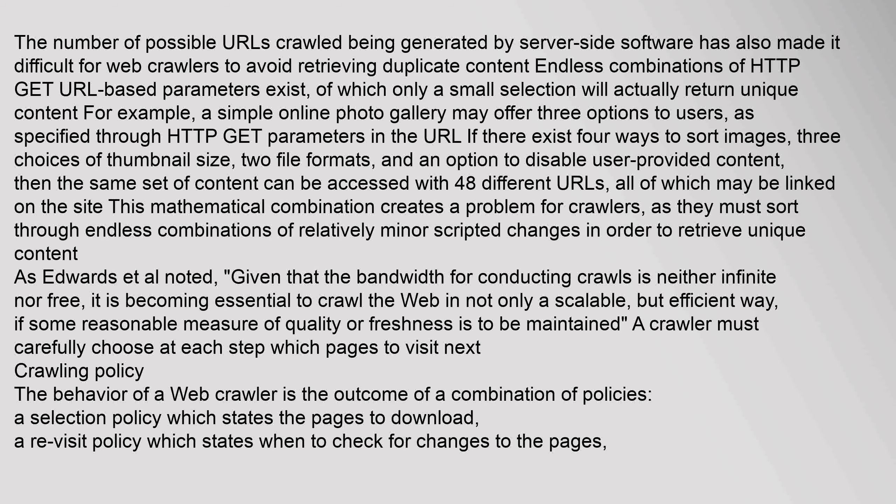The high rate of change can imply the pages might have already been updated or even deleted. The number of possible URLs crawled being generated by server-side software has also made it difficult for web crawlers to avoid retrieving duplicate content. Endless combinations of HTTP GET URL-based parameters exist, of which only a small selection will actually return unique content. For example, a simple online photo gallery may offer three options specified through HTTP GET parameters; if there exist four ways to sort images, three choices of thumbnail size, two file formats, and an option to disable user-provided content, then the same content can be accessed with 48 different URLs. As Edwards et al. noted, it is becoming essential to crawl the web in not only a scalable but efficient way if some reasonable measure of quality or freshness is to be maintained.